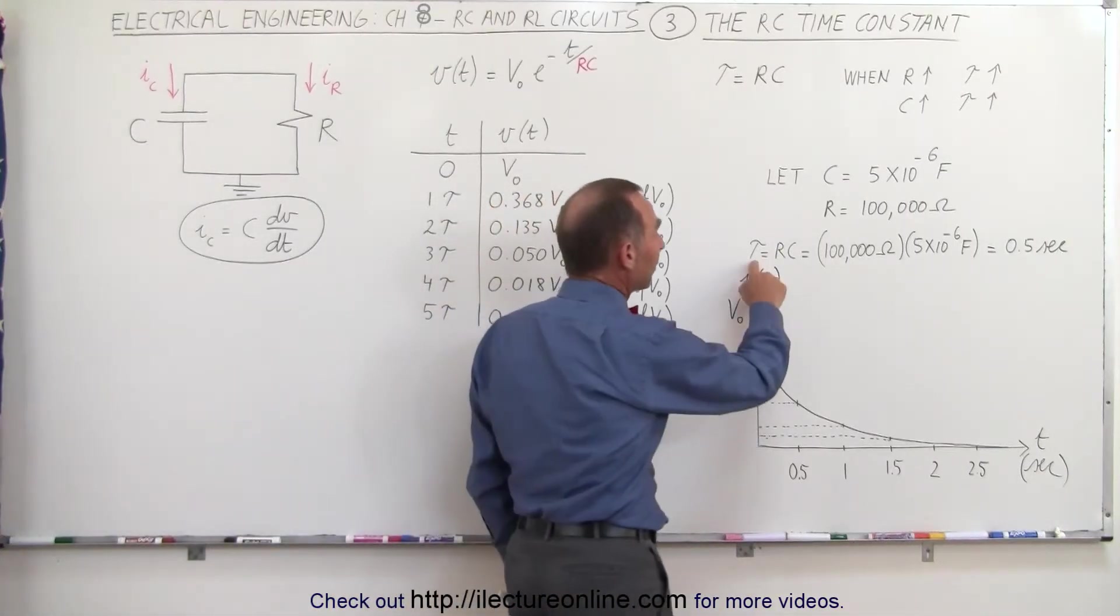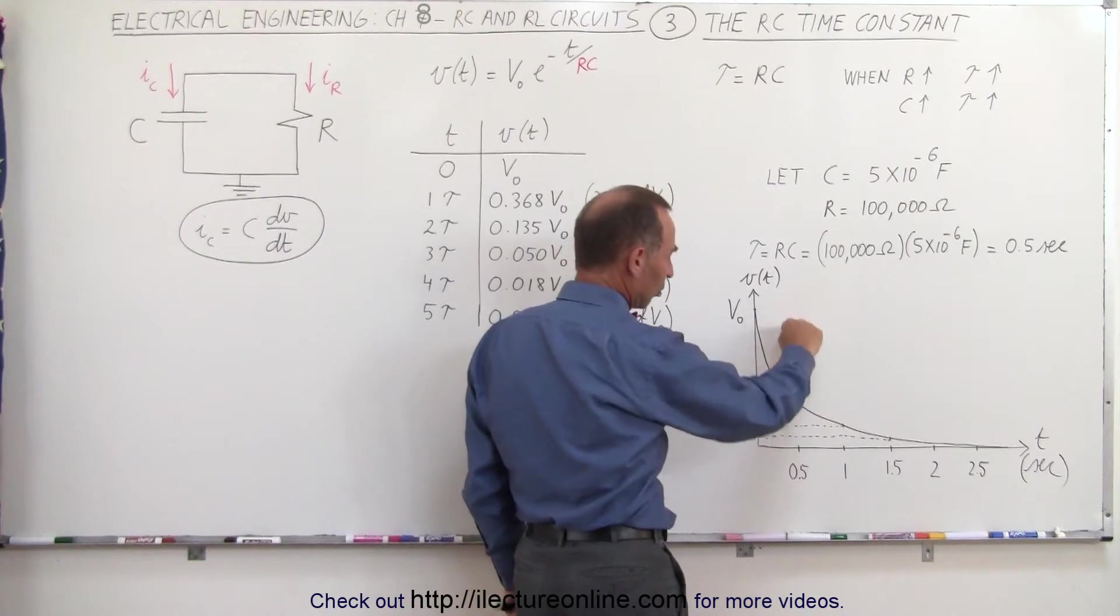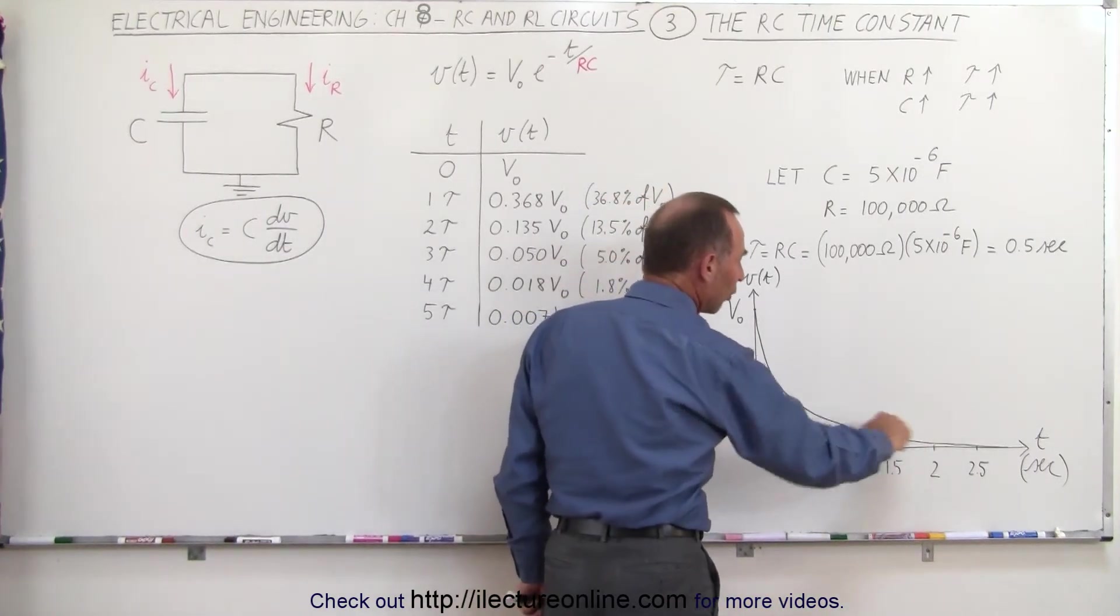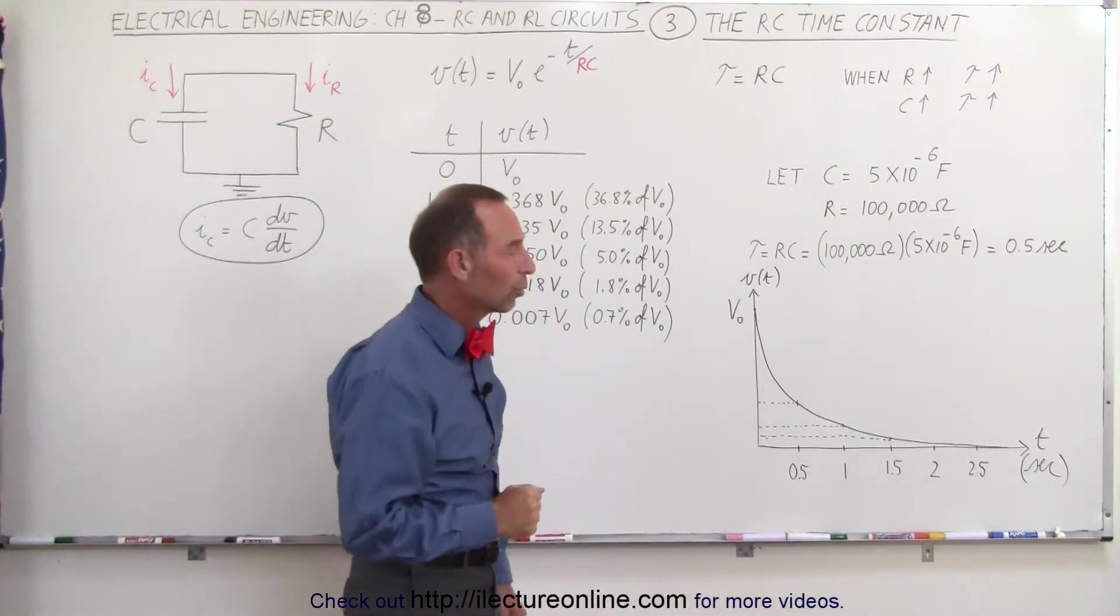Notice that if the time constant is equal to a half second, after a half second, the voltage will have dropped to this amount, after one second, it'll continue to drop, and so forth, and eventually, as time reaches infinity, then, of course, the voltage will go to zero.